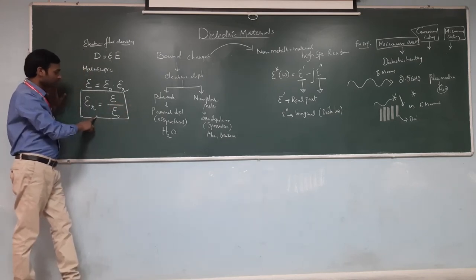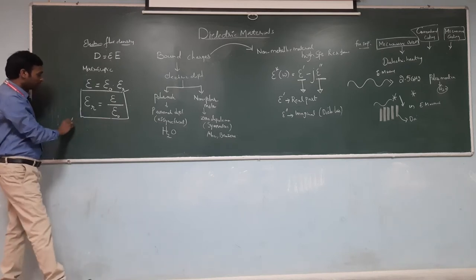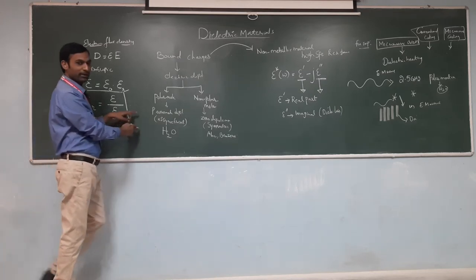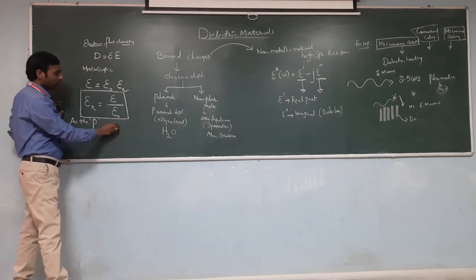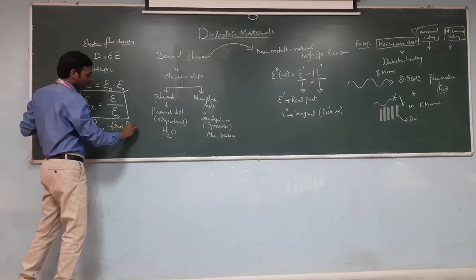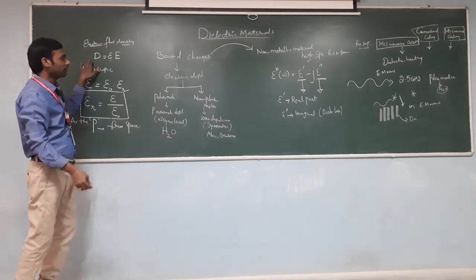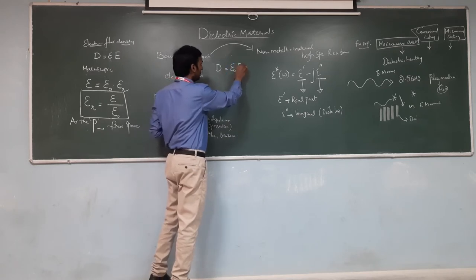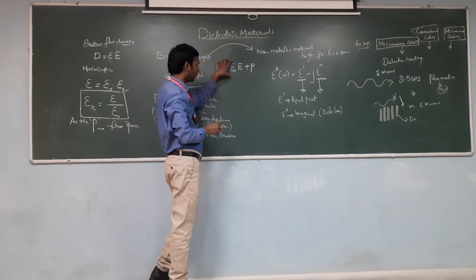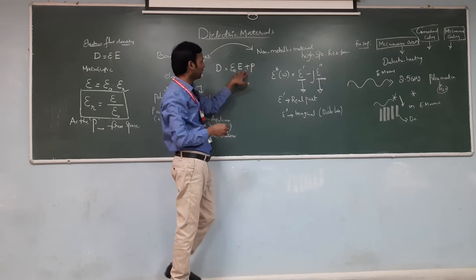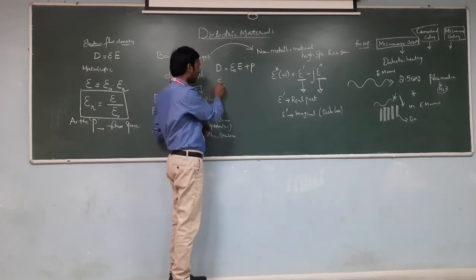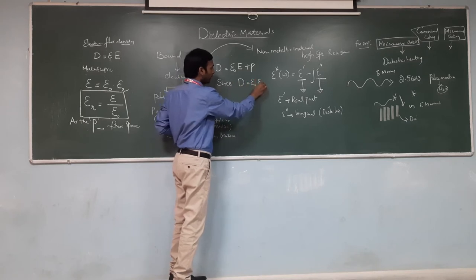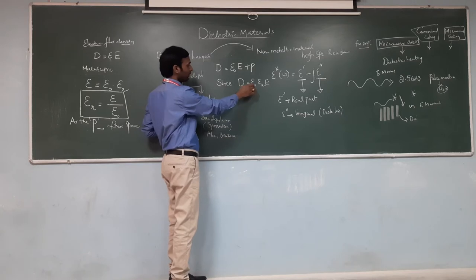Based on this equation, I am representing polarization P, which measures additional flux density compared to that arising from free space of the material. I write the equation D = ε₀E + P. Electric flux density equals permittivity of free space plus the additional polarization P. Substituting into the above equation: εE = ε₀E + P.